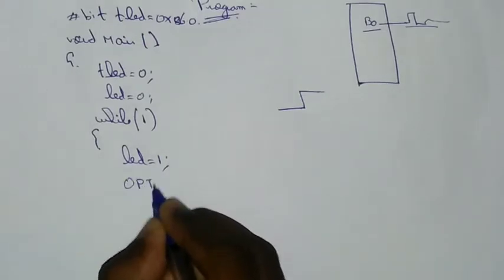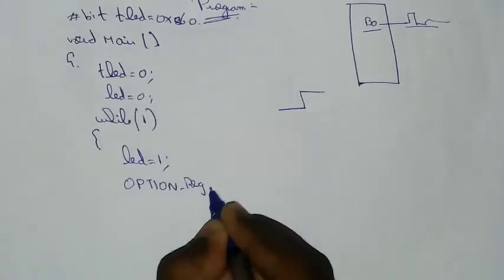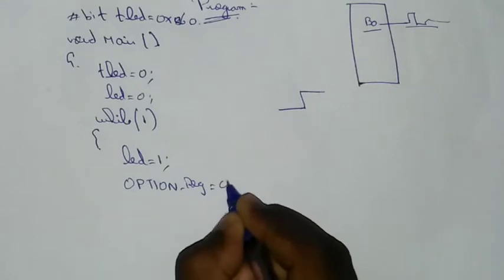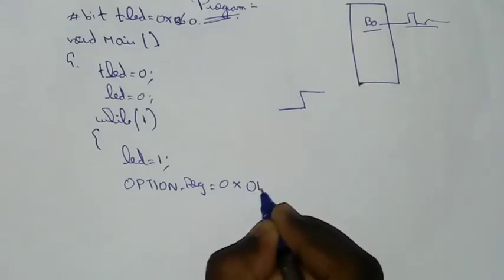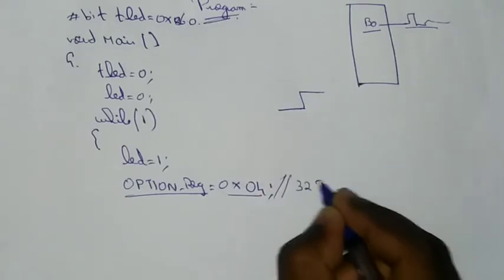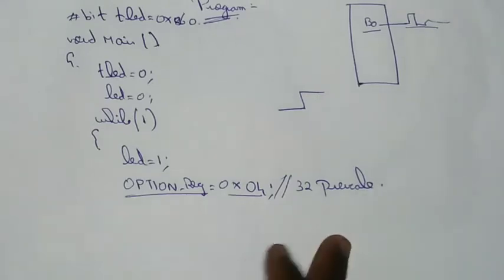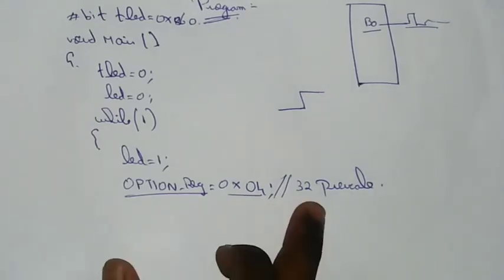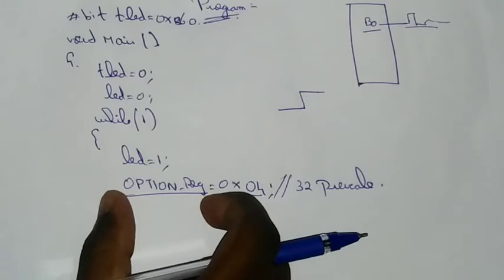Option register — I will say what prescale is. I will say 0x04, that means 32 prescale value added to the meaning. 0x04 — 32 prescale value added to the meaning.